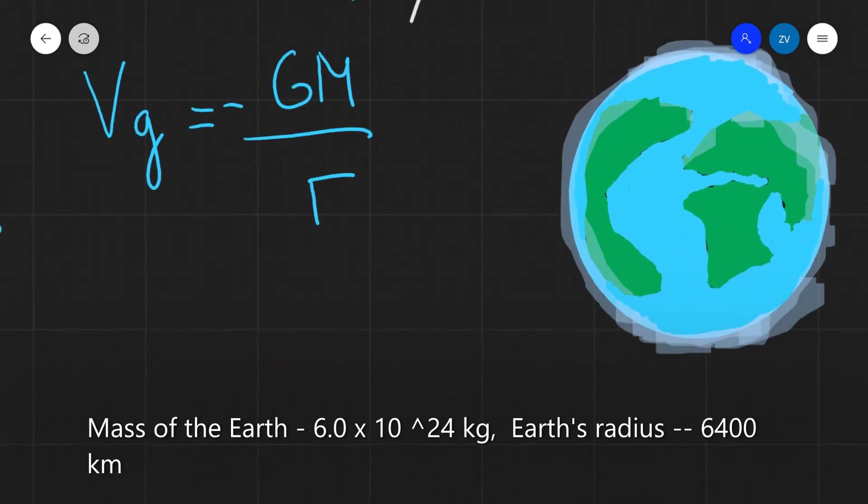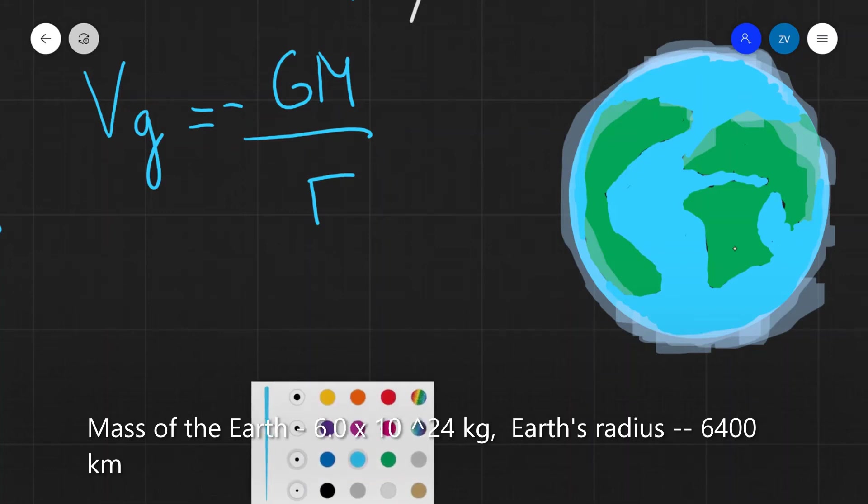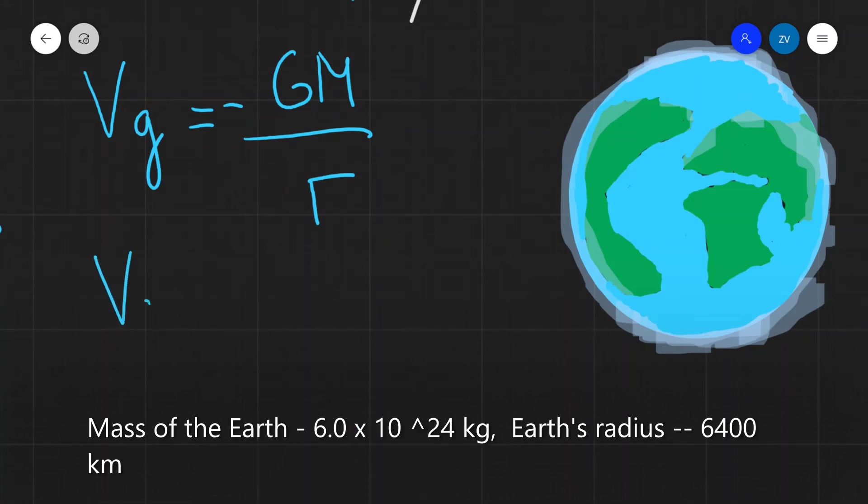All we need to do is substitute into that formula. Our Vg, or the gravitational potential, will be minus G, which is minus 6.67 times 10 to the power of minus 11, times the mass of the Earth, which is equal to 6.0 times 10 to the power of 24. And now we're going to divide by the distance to the surface, which is essentially the radius of the Earth, which is 6,400 kilometers.